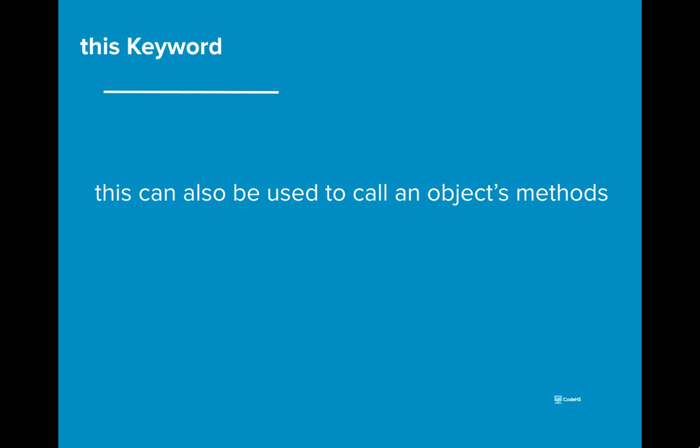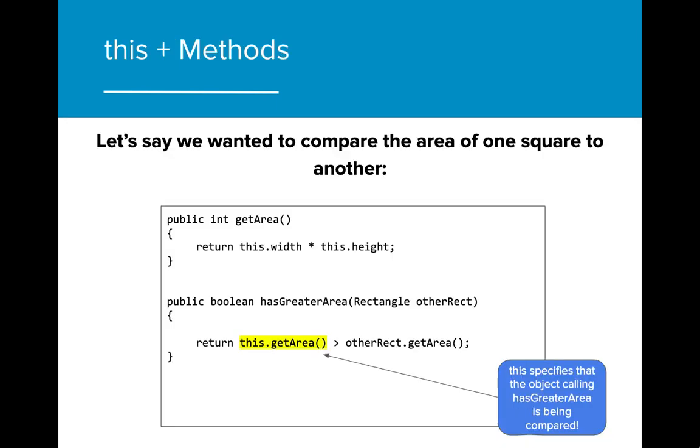Because this is a reference to a specific object, it can also be used to call an object's methods. Suppose we wanted to create a method to compare the area of one rectangle to another. We could do so by writing a hasGreaterArea method that took the area of one rectangle and compared it to another. In this example, we see that the keyword this can be used to call the object methods, just as otherRect.getArea gets the area of the rectangle object otherRect.